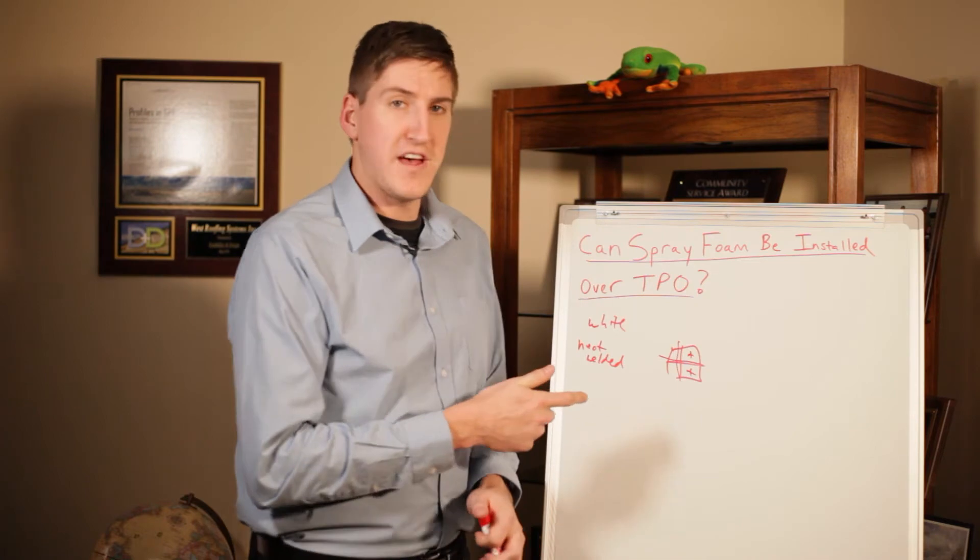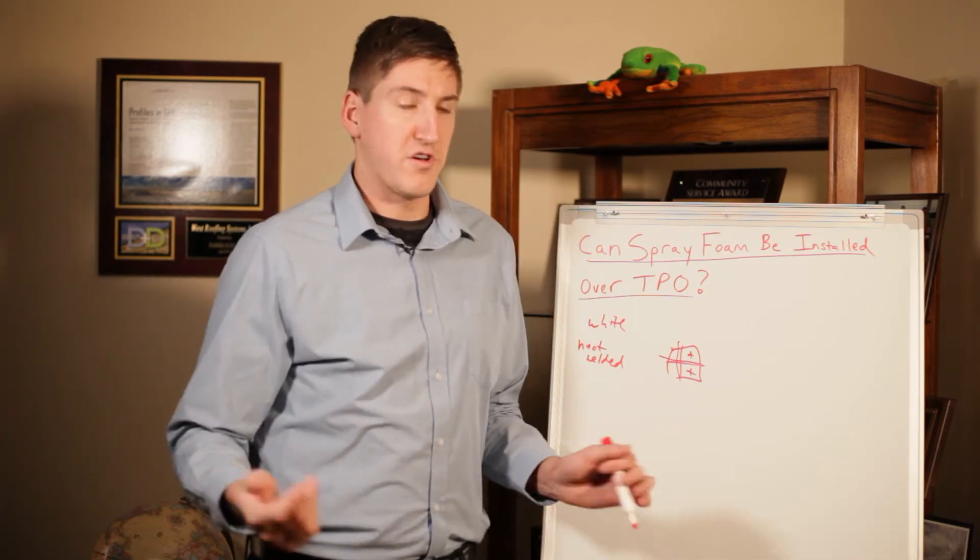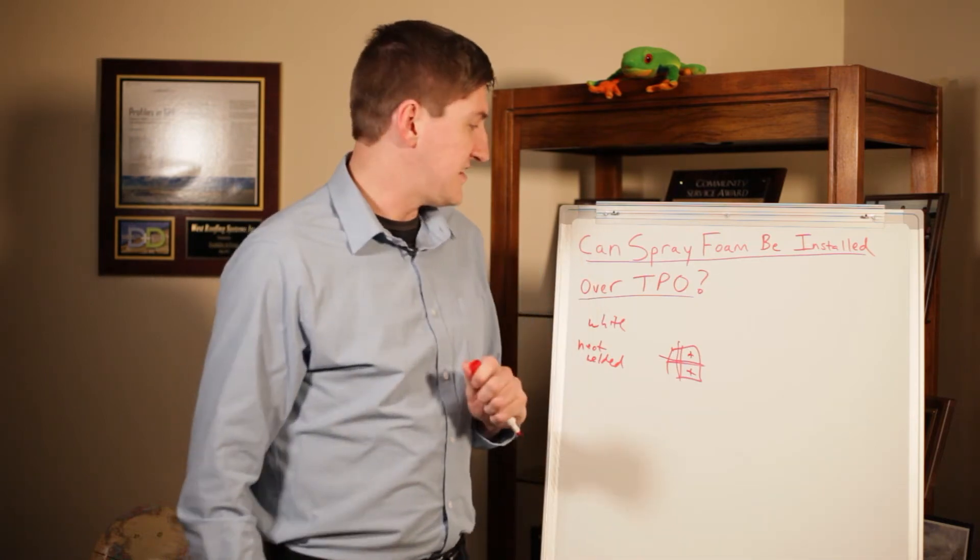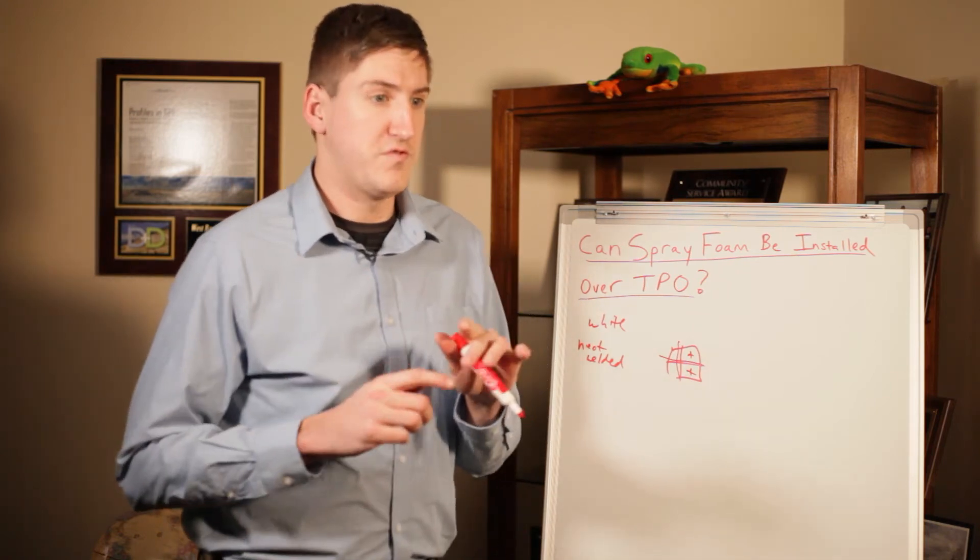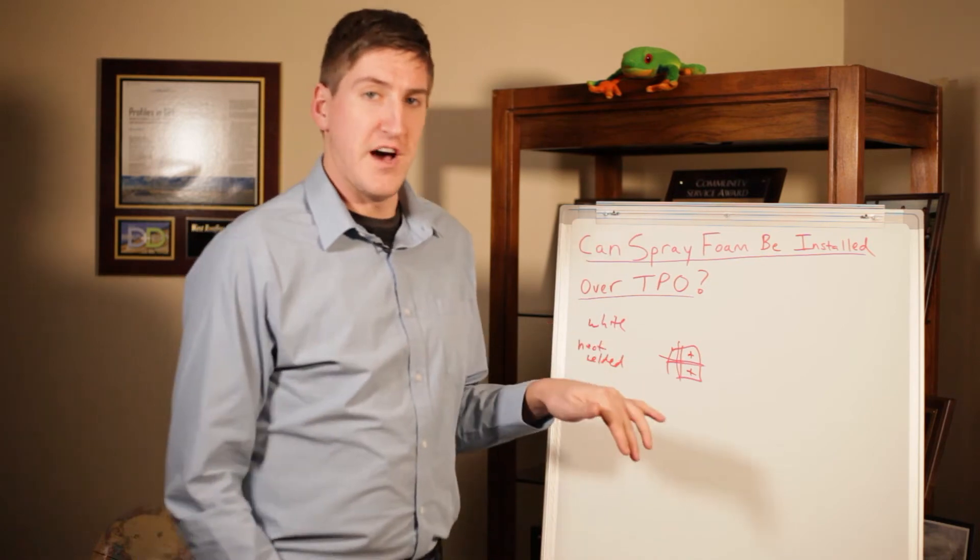So if not, if you spray foam over that, it could be unlevel. The water could go in random directions and it's not going to move the water the way the roof is intended to move. So you have to put a cover board over top.